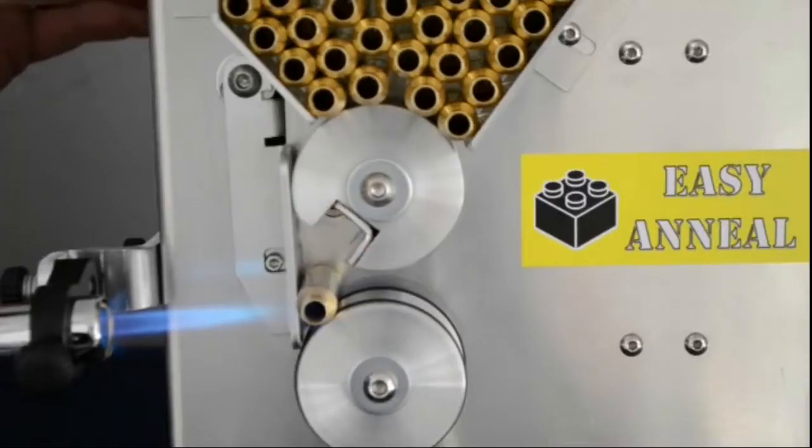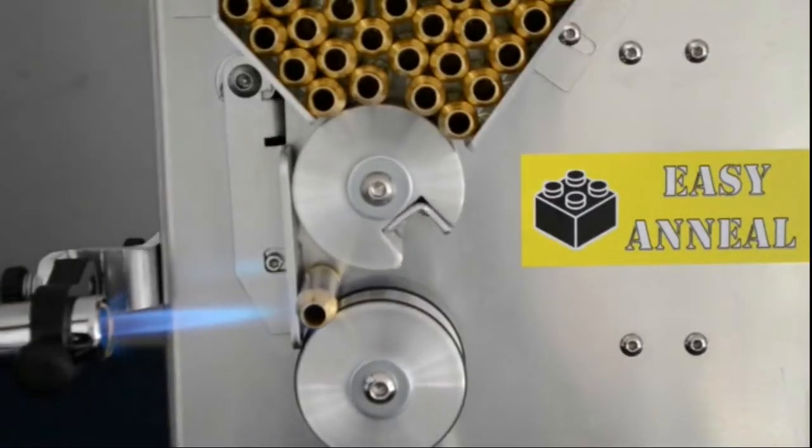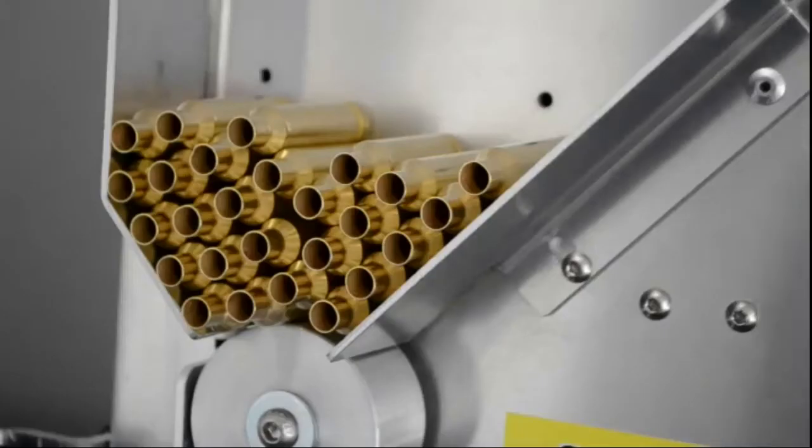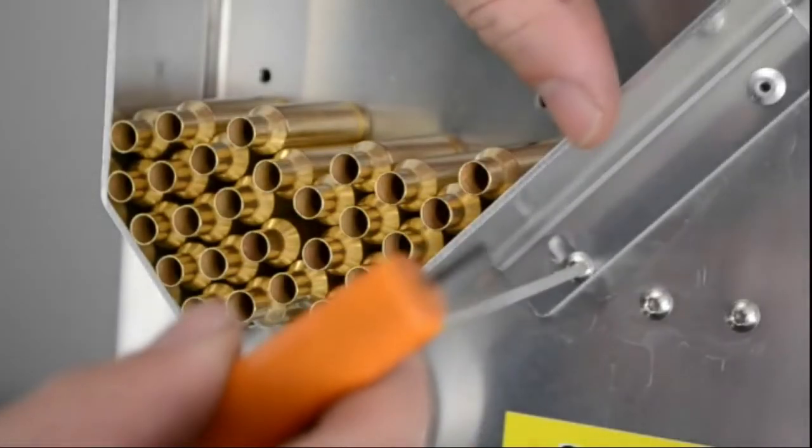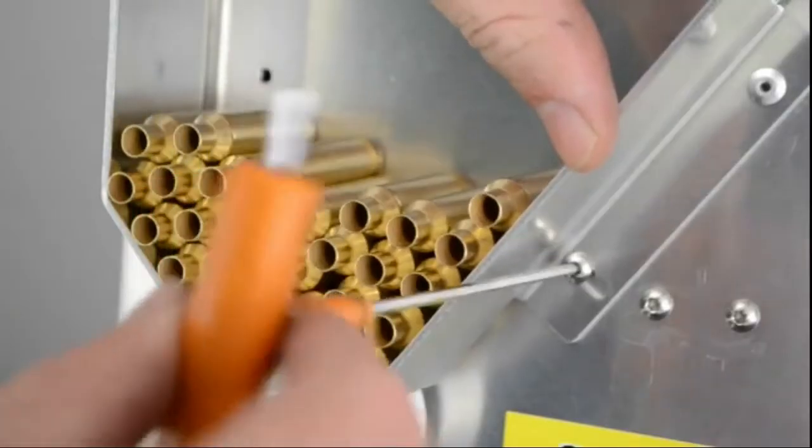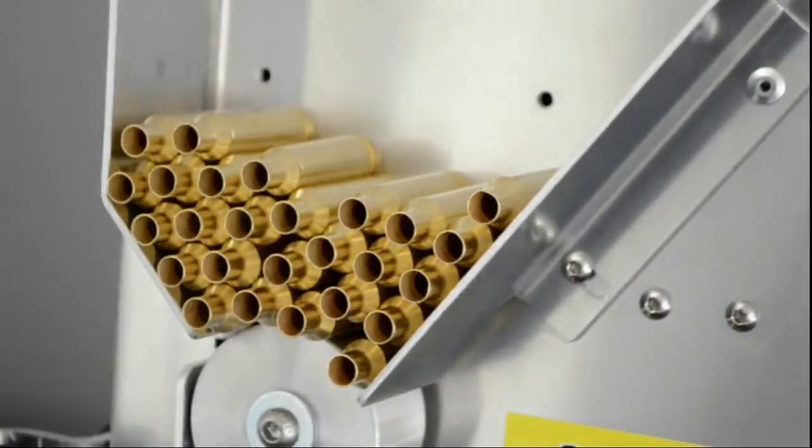The bottom wheel is fitted with two high temperature VITON O-rings to aid grip and rotation. The case hopper can accommodate up to 80 standard size cases and the feed opening is adjustable to prevent bridging.